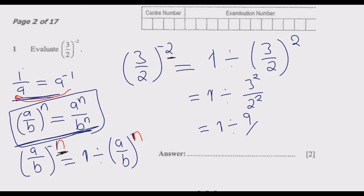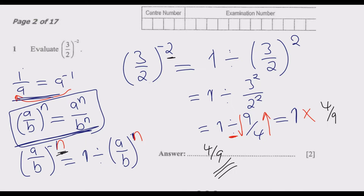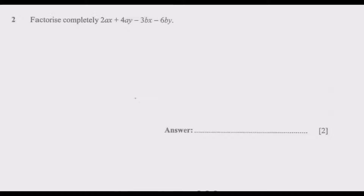So 3 to the power 2 gives us 9, and 2 to the power 2 is 2 times 2 which is 4. This becomes 1 divided by 9 over 4. By the principle of multiplication and division, division changes to multiplication and we swap, so we get 1 times 4 over 9, which is 4 over 9. So our answer for question 1 is 4 over 9.